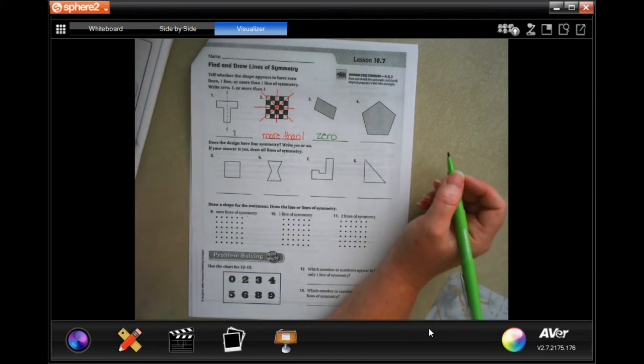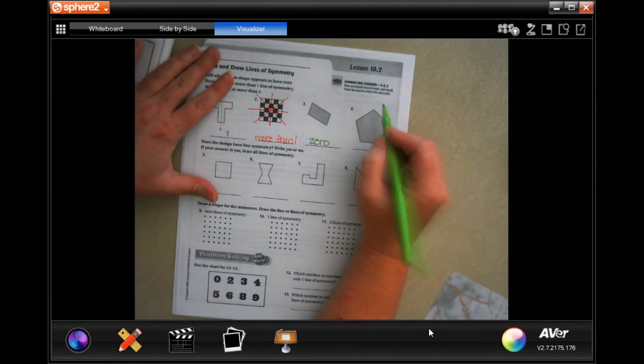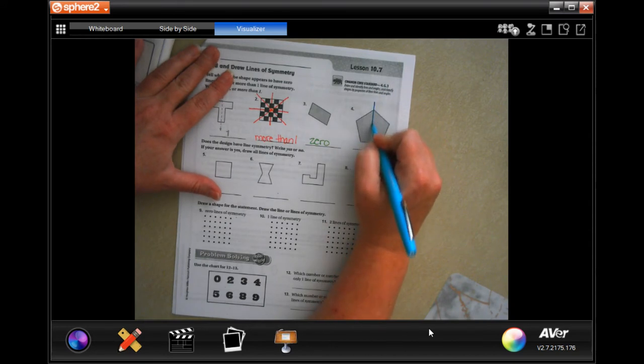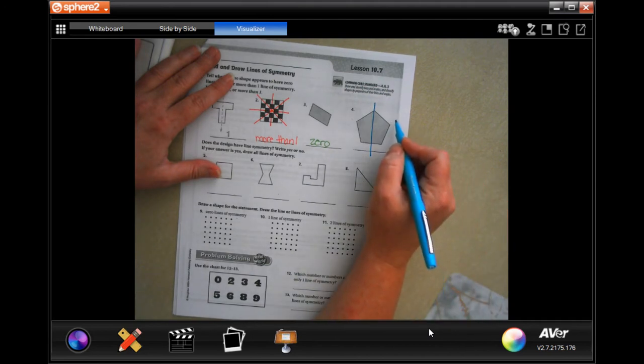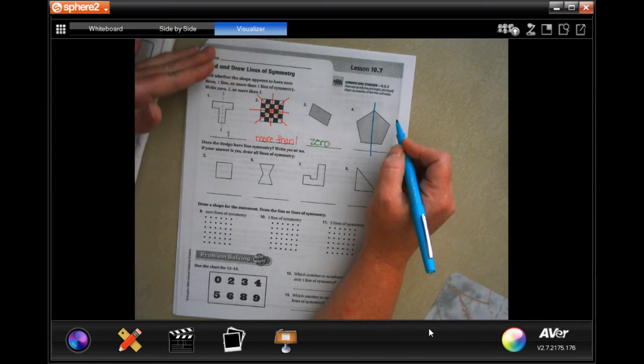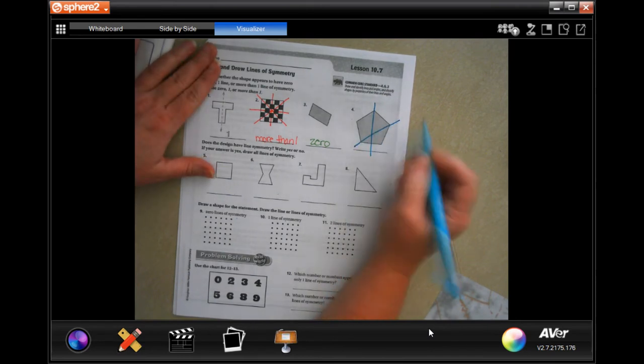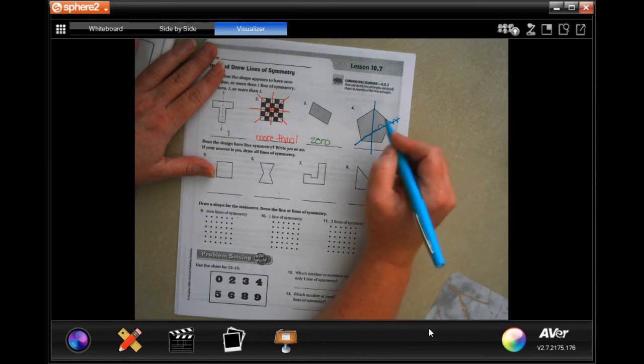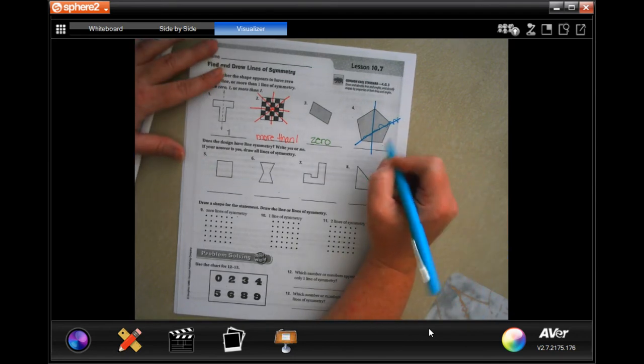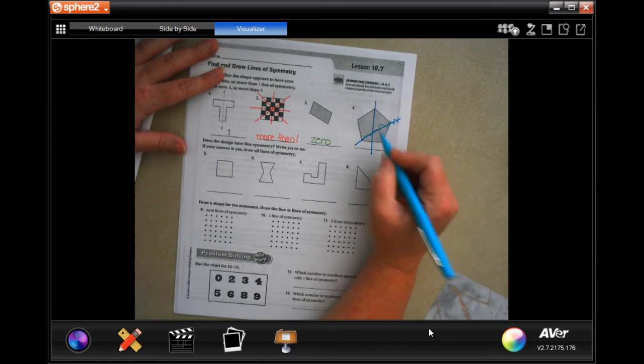All right, now this, okay, a pentagon. You can, I could fold it right there and do it. I could fold it also, hold it, oh right here, right here. Nope, not right there, not right there, sorry y'all. Okay, so on here our book says there's more than one. I don't see another way to split that, but our book says there's more than one.